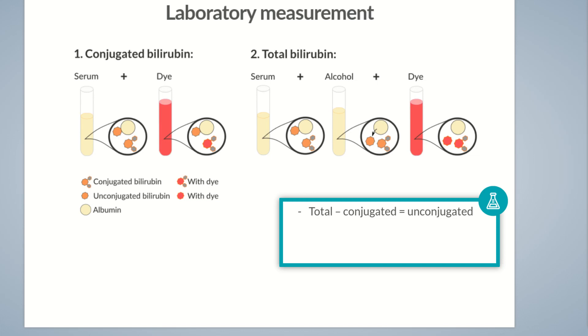In the clinical setting, the term direct bilirubin is used for conjugated bilirubin and indirect bilirubin for unconjugated bilirubin. Unconjugated bilirubin accounts for approximately 80% of bilirubin present in the blood of healthy individuals.